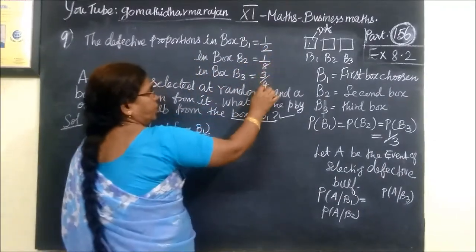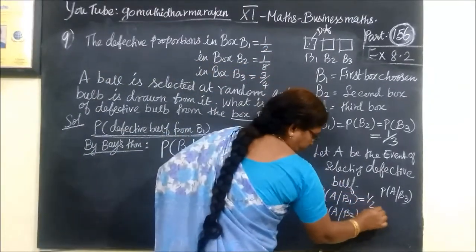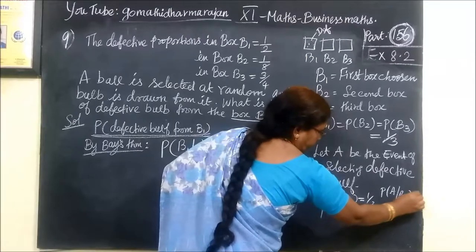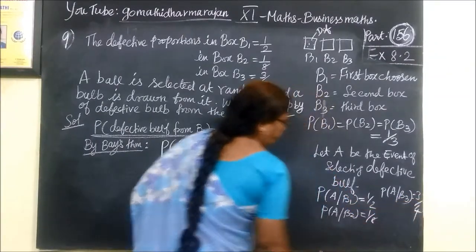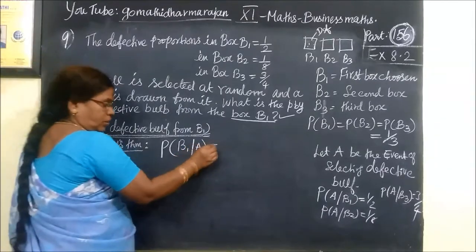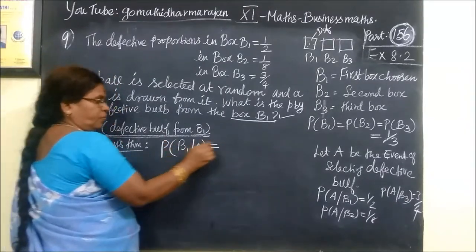1 by 2, 1 by 8, 3 by 4. So, 1 by 2, 1 by 8, then 3 by 4. This is the subject matter. So, this is equal to definition.